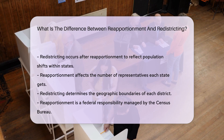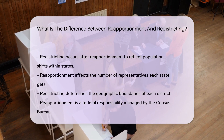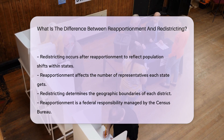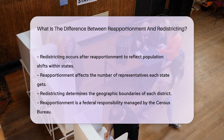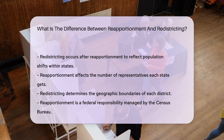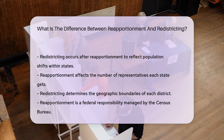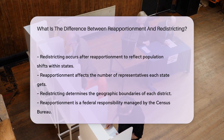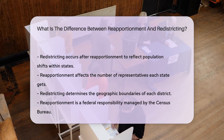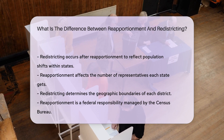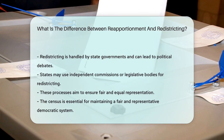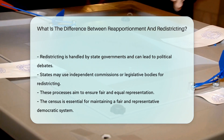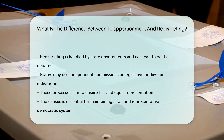Reapportionment affects the number of representatives each state gets, while redistricting determines the geographic boundaries of each district. Reapportionment is a federal responsibility managed by the Census Bureau, whereas redistricting is handled by state governments, often leading to political debates. States may use independent commissions or legislative bodies for redistricting.